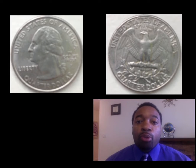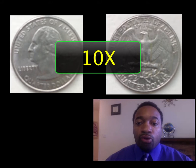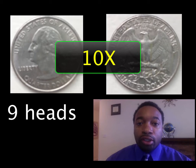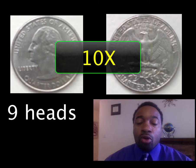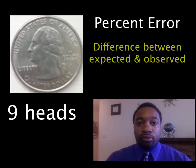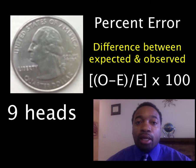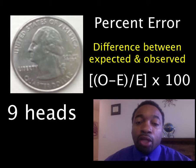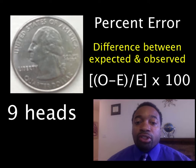This video is going to show you how to calculate and interpret percent error. Let's start off with an initial experiment. Let's say you flip a coin 10 times and you get nine heads. The question is: how far off are you from what you expected? Percent error is a calculation that can tell you that information. The formula for percent error is observed minus expected, divided by expected, and then you multiply by 100 to get percent. Percent error is the amount of difference between expected and observed quantities.